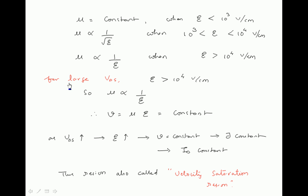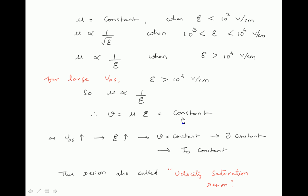For large VDS — that is, in saturation where VDS is greater than VGS minus VT — the electric field becomes greater than 10^4 V/cm. At this point, mu is directly proportional to 1 over electric field. Since drift velocity equals mu times electric field, if electric field increases and mobility decreases in the same proportion, the product — drift velocity — remains constant.